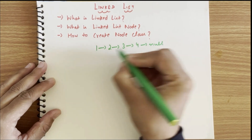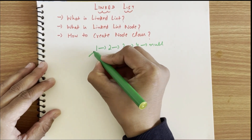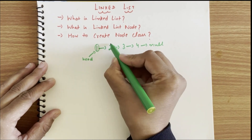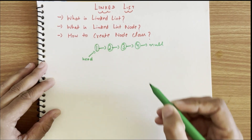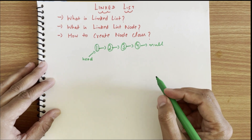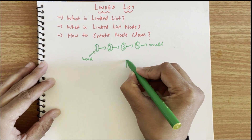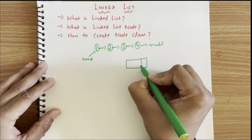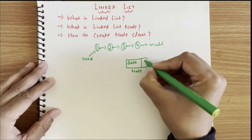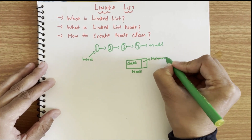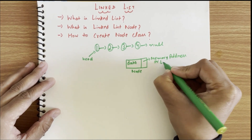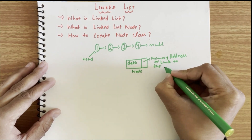There is one head to the linked list which will always point to the first linked list node. So one, two, three, and four are basically linked list nodes. A linked list node has mainly two components: one is the data — that is the data which the linked list will be holding — and secondly, the memory address.